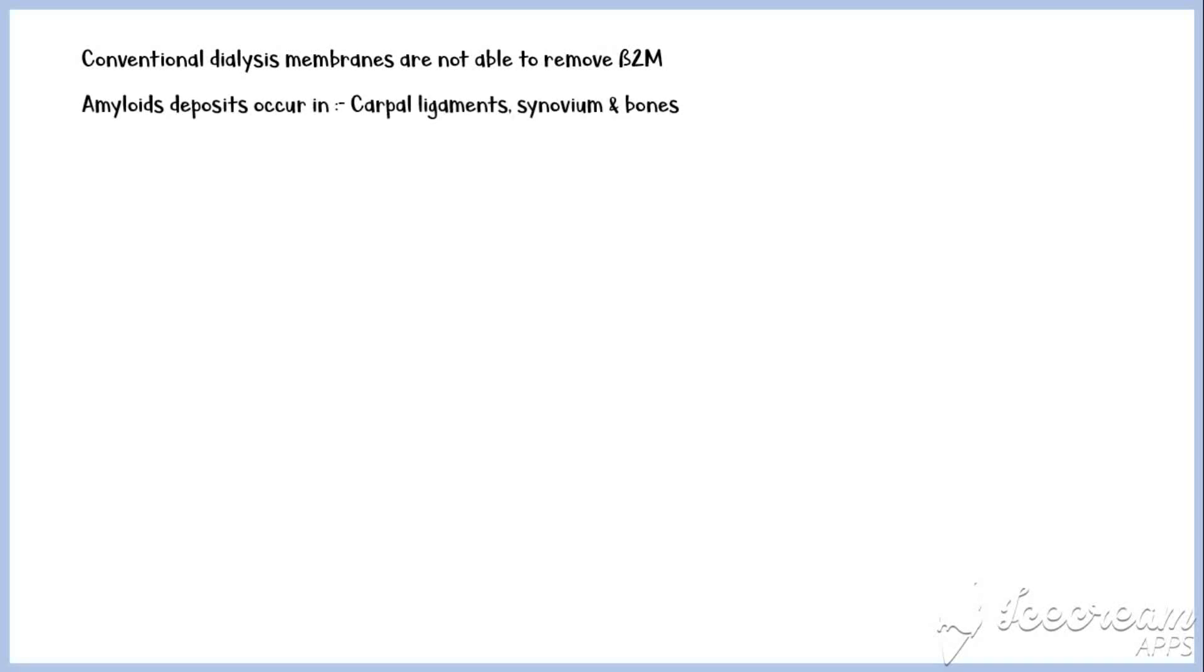Amyloid deposits commonly occur in carpal ligaments, synovium, and bone, causing carpal tunnel syndrome, destructive arthropathy, bone cysts, and fractures.